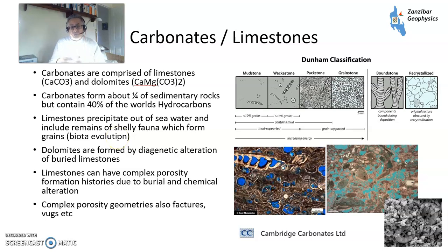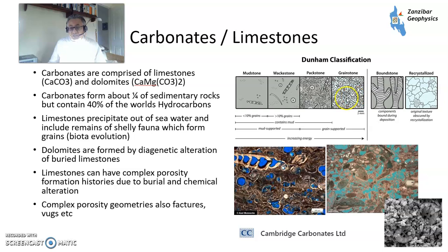Limestones precipitate out of seawater and also include the remains of shelly fauna, so there's quite a lot related to biotic revolutions — different types of organisms lived at different times and form different types of limestones. Dolomites are formed by diagenetic alteration of buried limestones, which tends to create extra porosity. They have complicated formation histories, burial histories, and complicated geometry. There are different grain types from the Dunham classification — mudstone, wackestone, packstone, and grainstone. Here are some thin sections posted by Cambridge Carbonates — please follow them, they're real world experts.